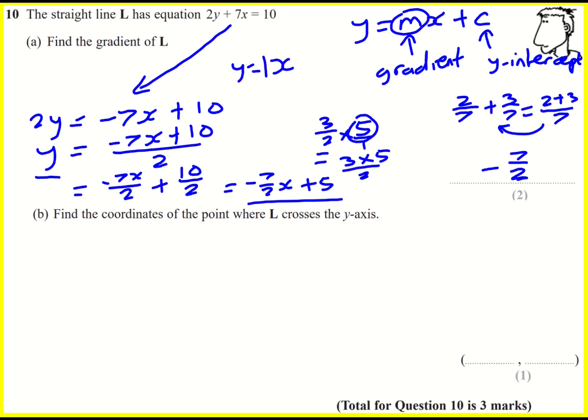Then find the coordinates of the point where L crosses the y-axis. That's actually our y-intercept. In this case it's going to have a negative gradient, it's going to come down a bit like this. It's the 5, it's when x is 0. When x is 0 that just disappears and we just get 5. So it's going to be when x is 0 and y is 5.